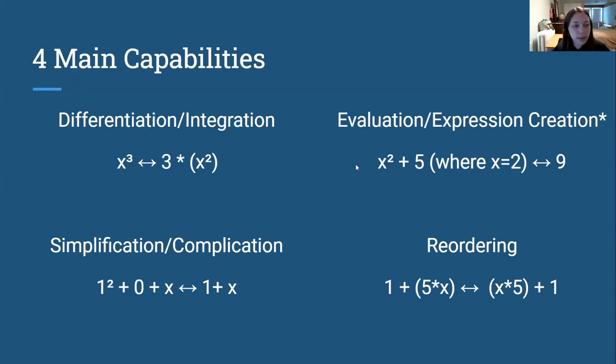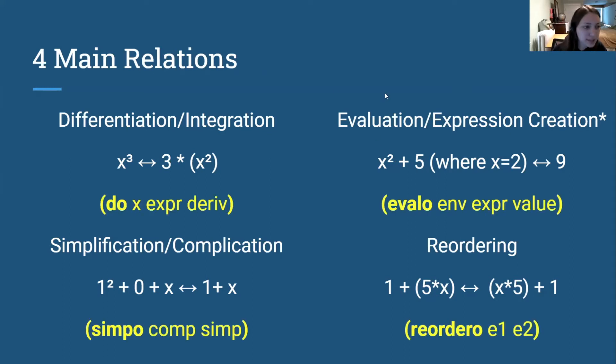And so DxO has four main capabilities: differentiation and backwards integration, simplification and then complication, evaluation and then the opposite of that is sort of interesting - it's expression creation and equation solving and some other things, and then reordering. So deeply reordering all addition and multiplication expressions inside of expressions. And so we have four main relations to do those things. The relations aren't connected in DxO, but the idea is that you would connect them for your own problem, and then I also wrote some things that connect them.